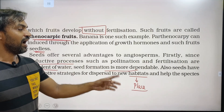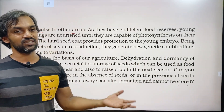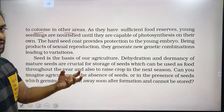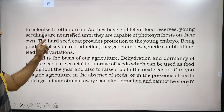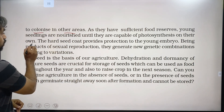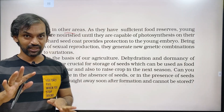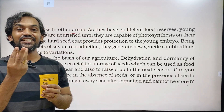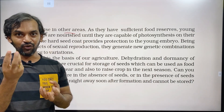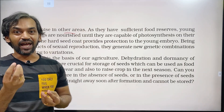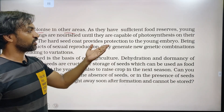Seeds help the species to colonize in other areas through dispersal. Seeds have sufficient food reserves, so seedlings are nourished until they are capable of photosynthesis on their own. The food is stored in remnant endosperm or perisperm. The hard seed coat provides protection to the young embryo.